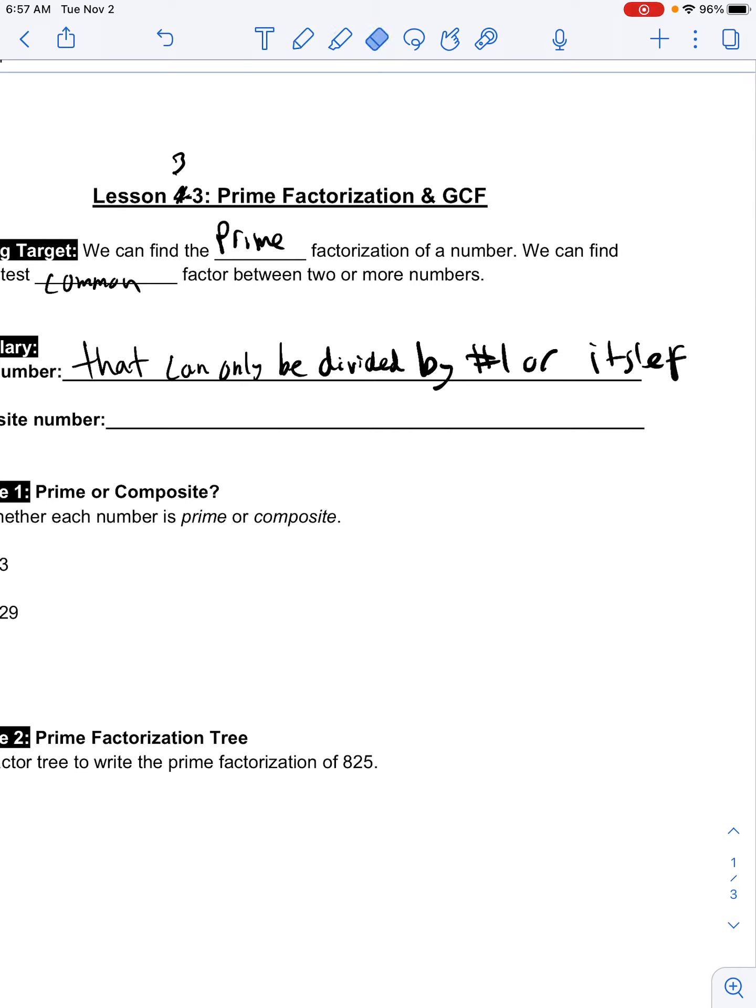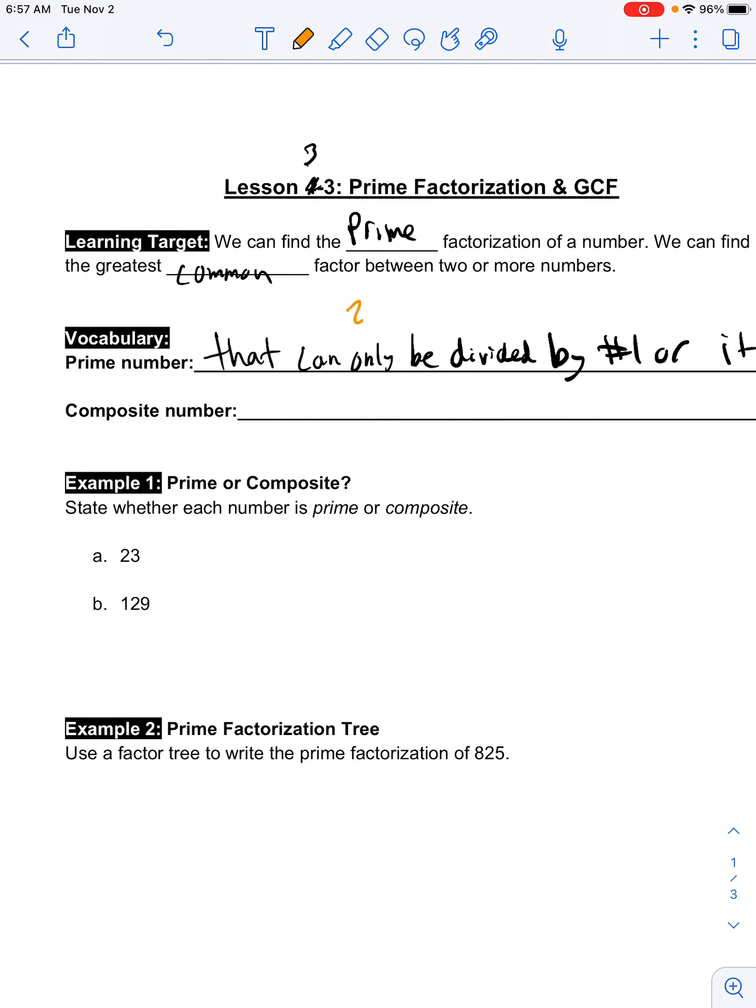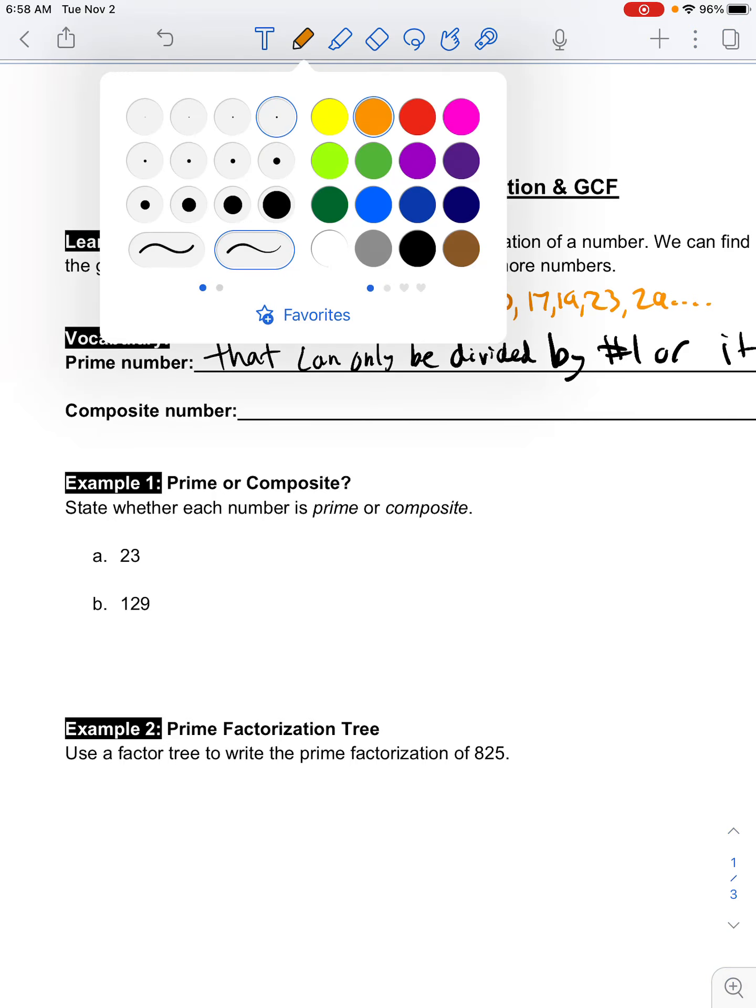And so, there's some super common examples. I'll just list a few of them off here that are examples of prime numbers: 2, 3, 5, 7, 11, 13, 17, 19, 23, 29. And it goes on and on. As you notice, there's a lot more at the beginning, and then as the numbers start getting bigger, they start to have more factors. So, they get harder and harder to find. But those are some of the smaller ones that are super common.